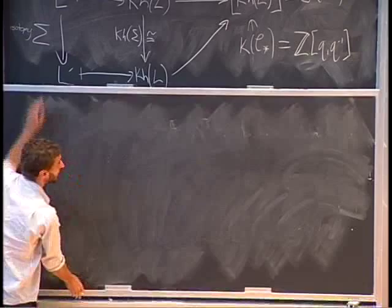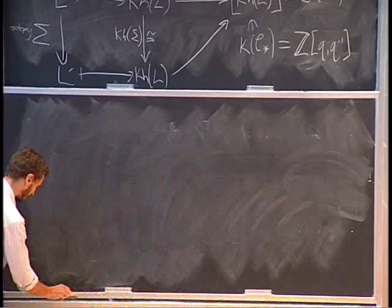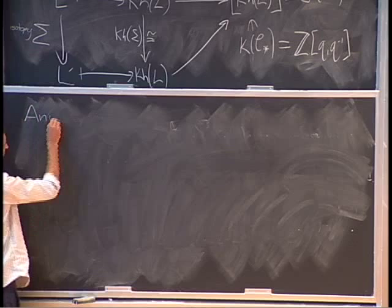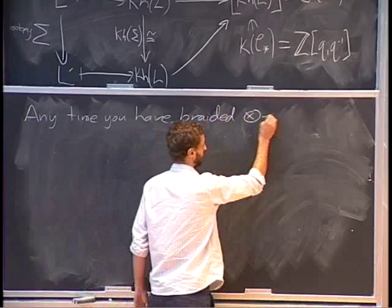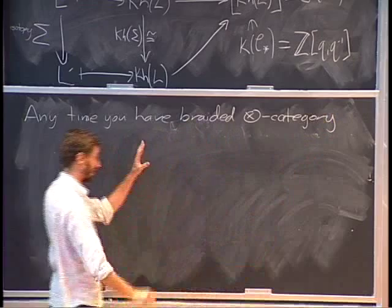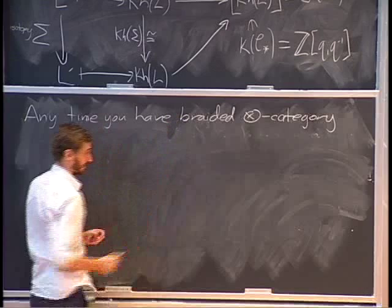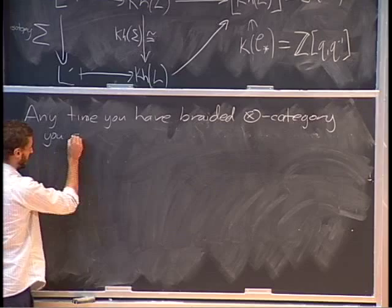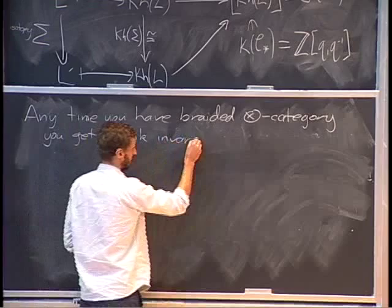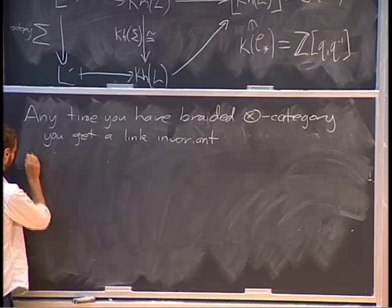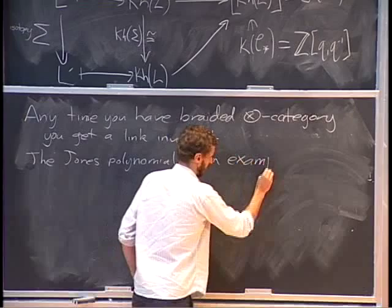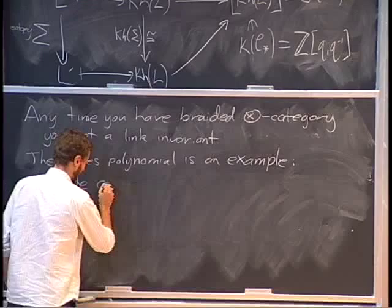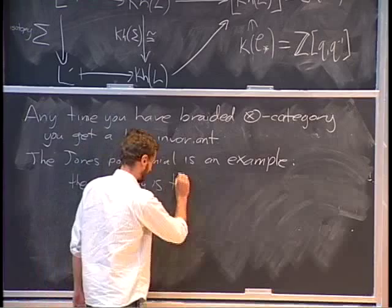I'm going to spend a few minutes talking about the Jones polynomial, because any time you have a braided tensor category, you get a link invariant right away. The Jones polynomial is an example of this. The braided tensor category is the Temperley-Lieb category, which I'll tell you about.